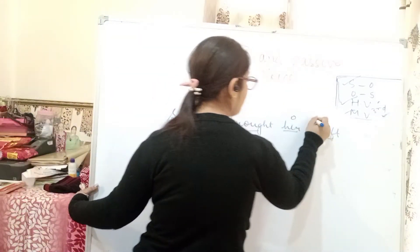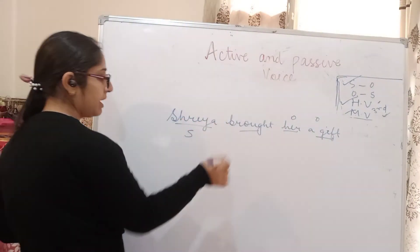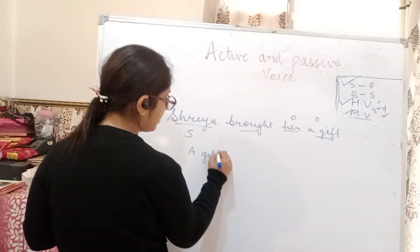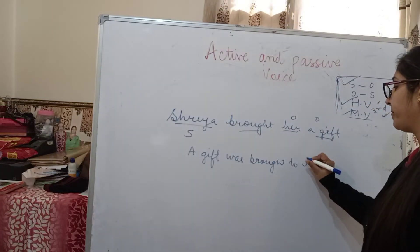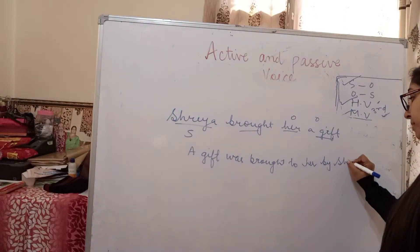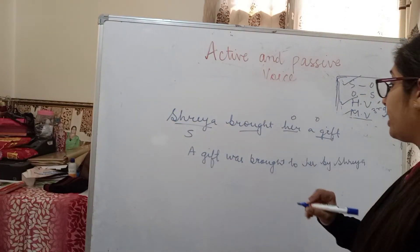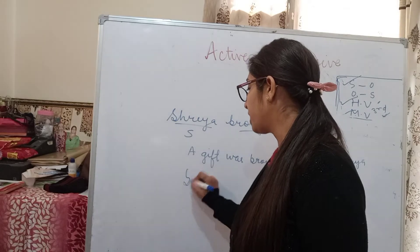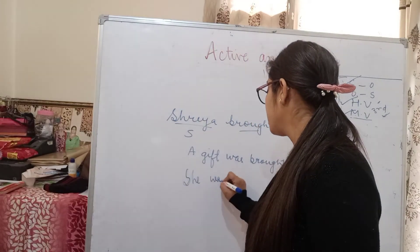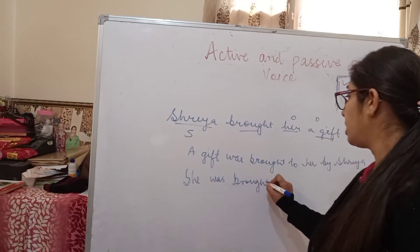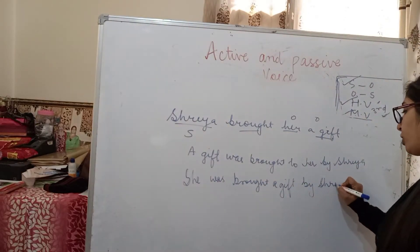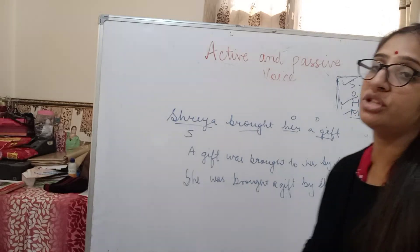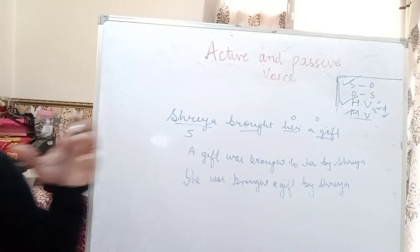Another example in simple past: 'I gave her a gift.' First passive form: 'A gift was given to her by me.' Second passive form: 'She was given a gift by me.' I hope you have understood how to change sentences from active to passive when they have two objects.